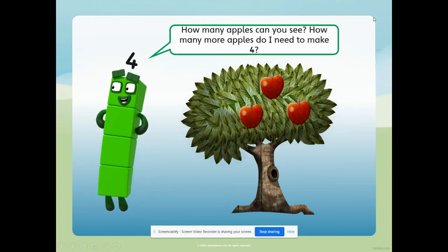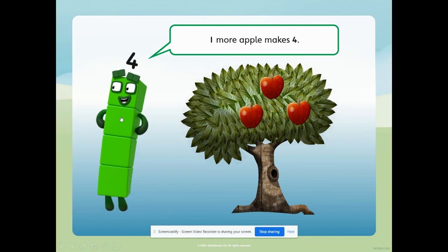How many apples can you see? Let's count the apples together. One, two, three. How many more apples do I need to make four? He's got three - how many more does he need to make four? He needs one more, doesn't he? One more apple. One more apple - it fell on the floor! Ready to eat. Because three plus one equals four. Three and one more makes four altogether.